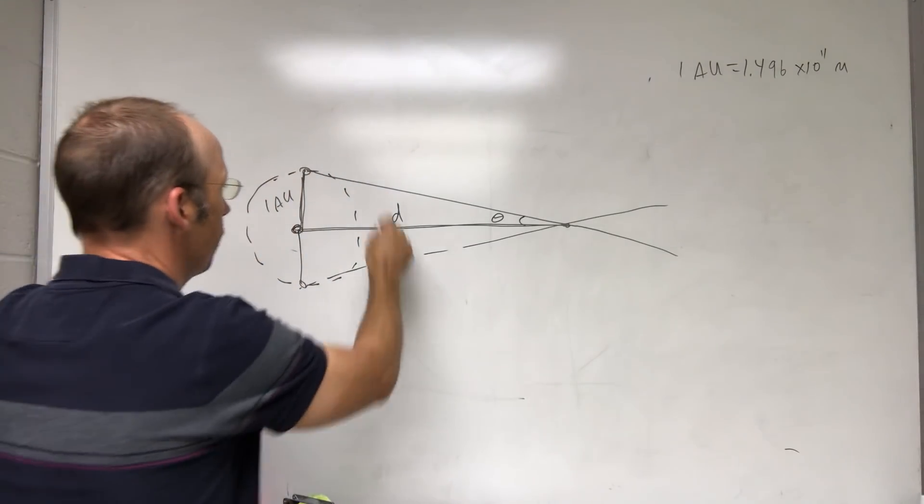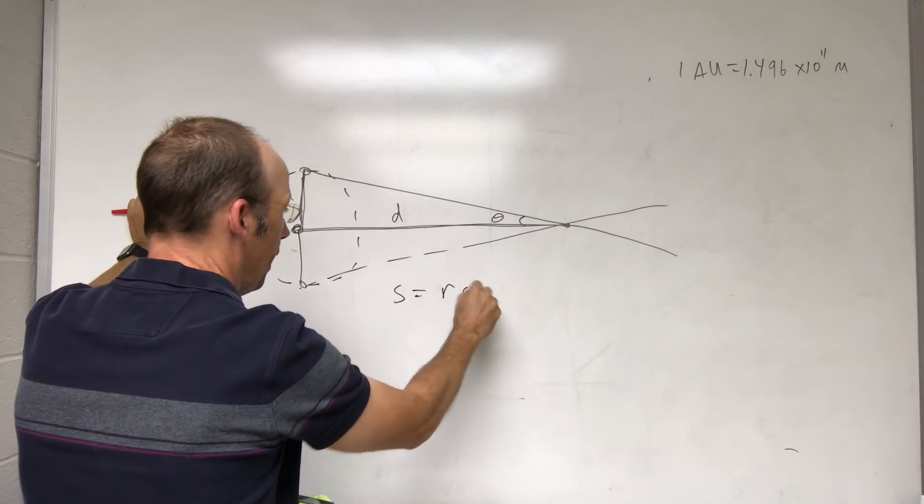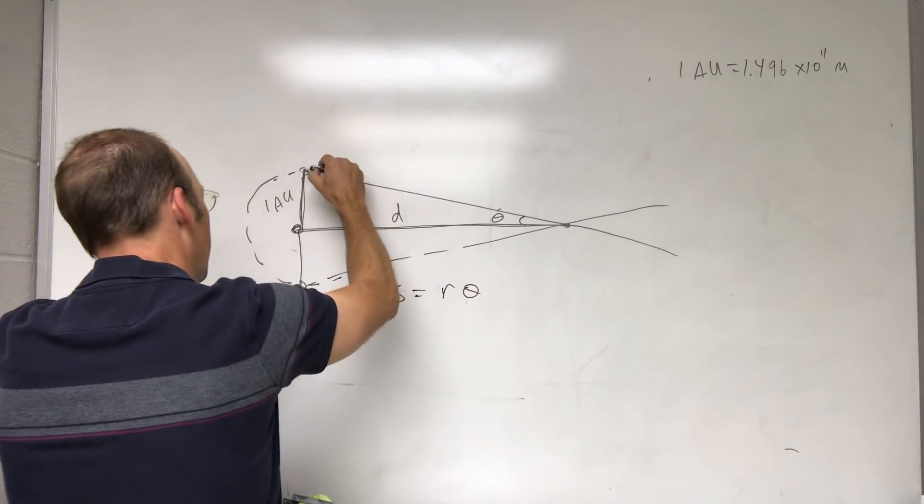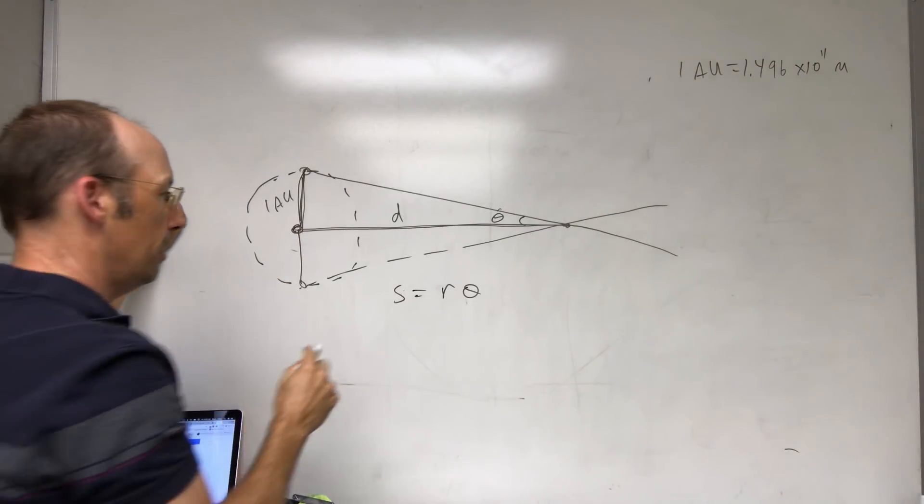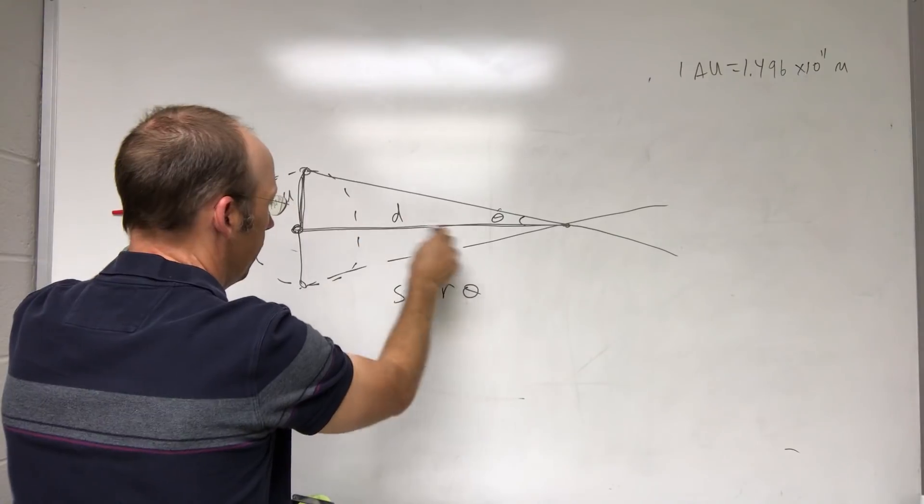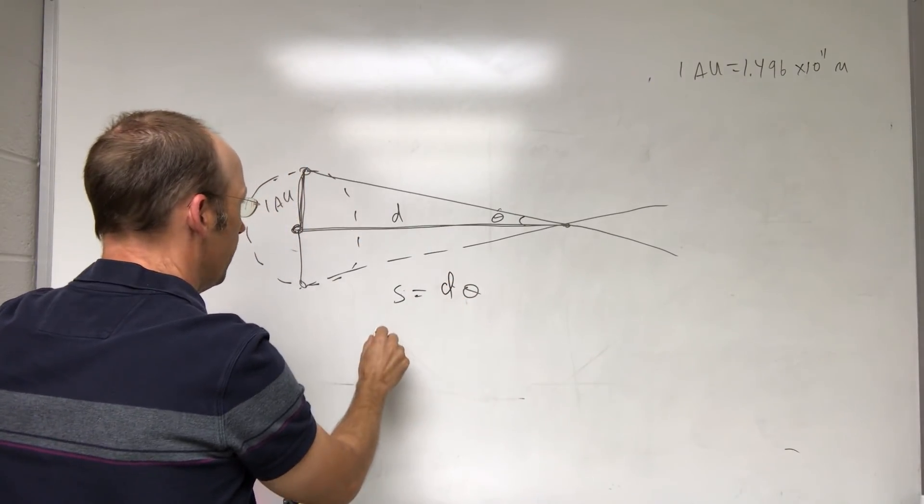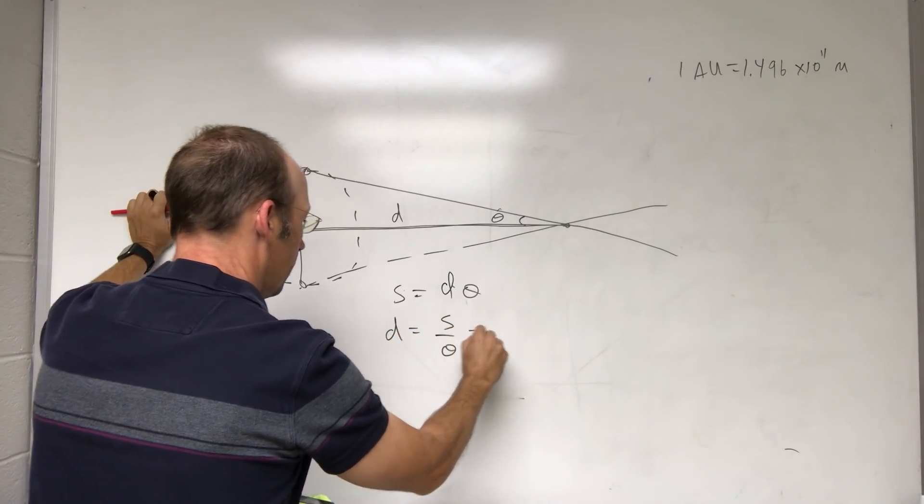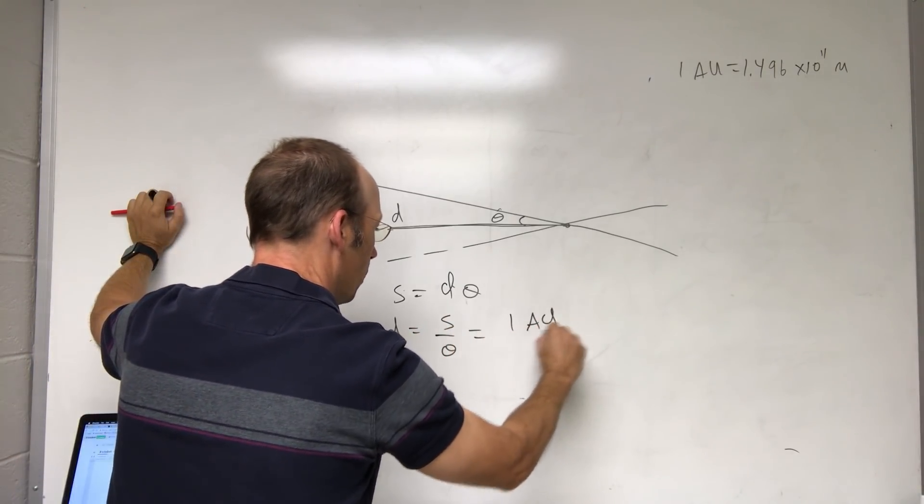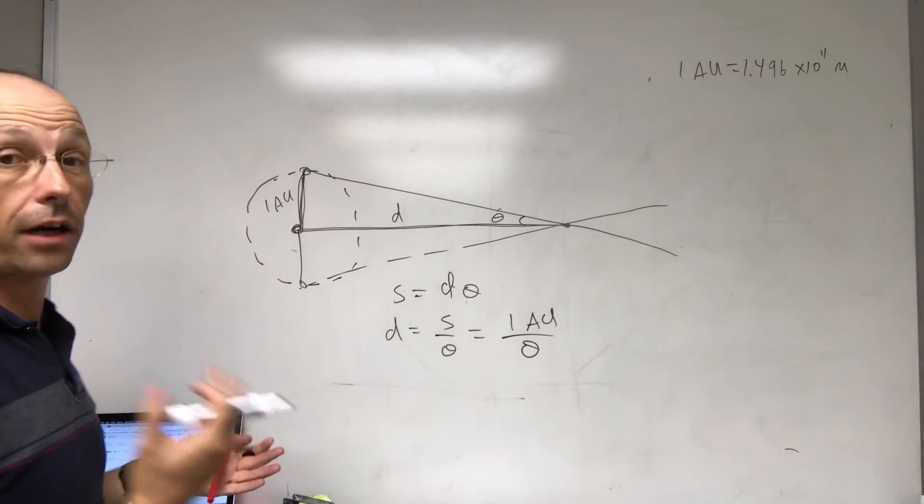Which in that case, it doesn't matter which one I use, I can use this arc length equals R theta. That's it. This is theta. And that's like part of a circle. It works. Trust me. So this would be R then. Okay, but I'm calling that D. So now if I want to solve for D, I get D equals S over theta equals one AU over theta. And so I can find that distance.